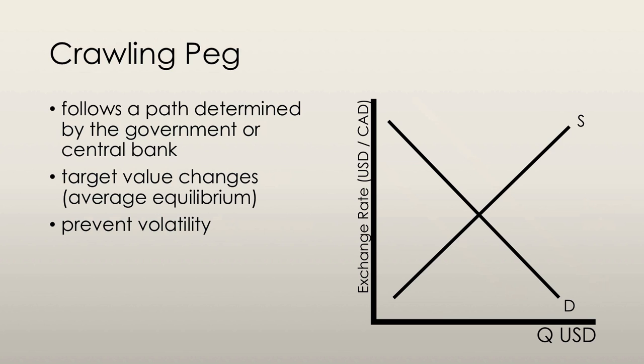Ideally, the target value is the equilibrium exchange rate on average. But the peg seeks to prevent large swings in the expected future exchange rate that would cause large fluctuations in the exchange rate.